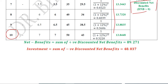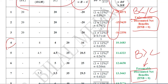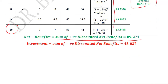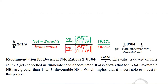We can now sum these values separately. Summing the green values gives the sum of the positive discounted net benefits. Summing the red values gives 48.037, which is the sum of the negative discounted net benefits. We then divide them as per the formula, substituting the positive and negative values.